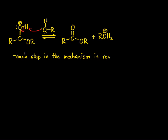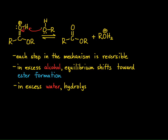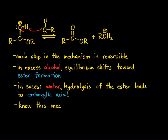Each step in this mechanism is reversible, so you need to be able to go from an ester back to a carboxylic acid. In order to produce ester you usually have an excess of alcohol, and that excess shifts the equilibrium based on Le Chatelier's principle toward ester formation. But if excess water is present, you can hydrolyze the ester, leading to formation of carboxylic acid. You need to know this mechanism forwards and backwards, literally.